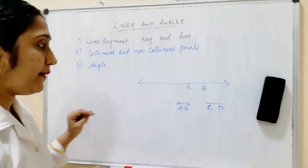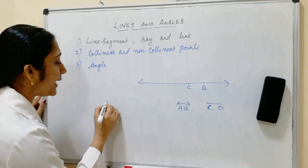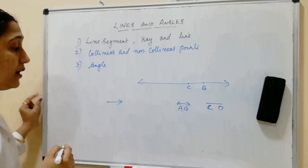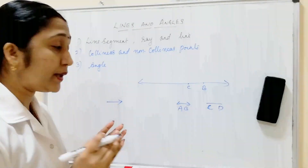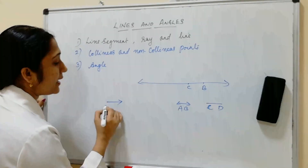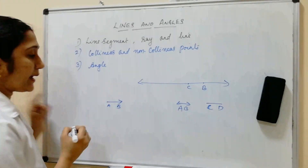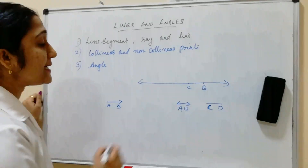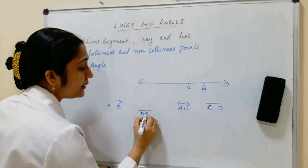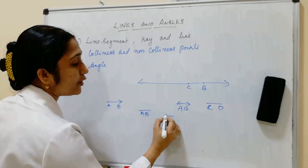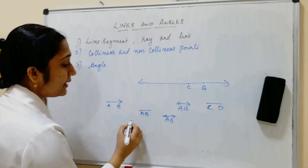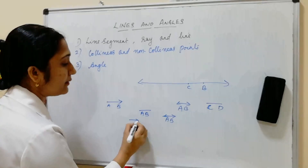What is a ray? A ray has only one end point. This is a ray, and it is denoted as ray AB. So a line segment is denoted by AB with a bar, and a line is denoted by AB with a double arrow, and a ray is denoted by AB with a single arrow.